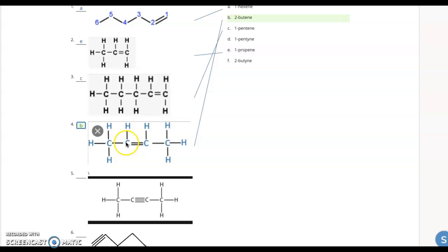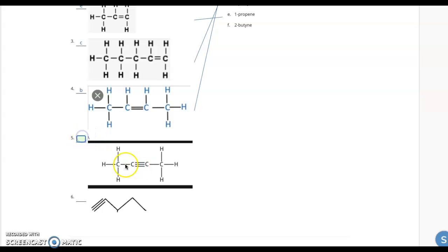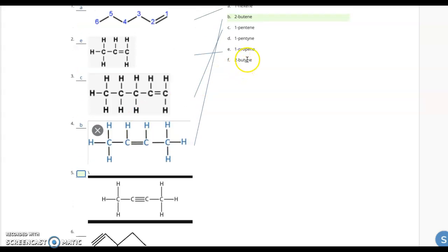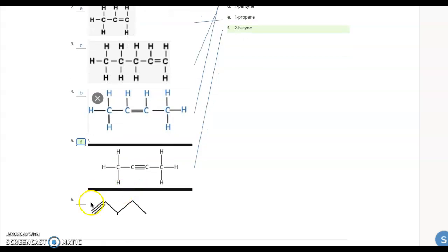But two butene would be letter B. It's number two because counting one, two, three, four - it's on carbon two that way and one, two on carbon two that way as well. Similarly, this one's the same compound, except it's a triple bond in the middle instead of a double bond, which means it's two butene again, but triple bond is Y-N-E. So it's two butyne.